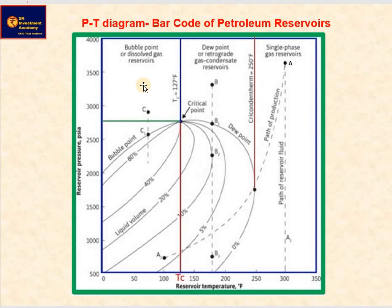Now, if the initial reservoir fluid composition is found at the point C, the reservoir would be in one phase state, that is oil. Here, the temperature is below the critical point temperature. This is called the oil reservoir.